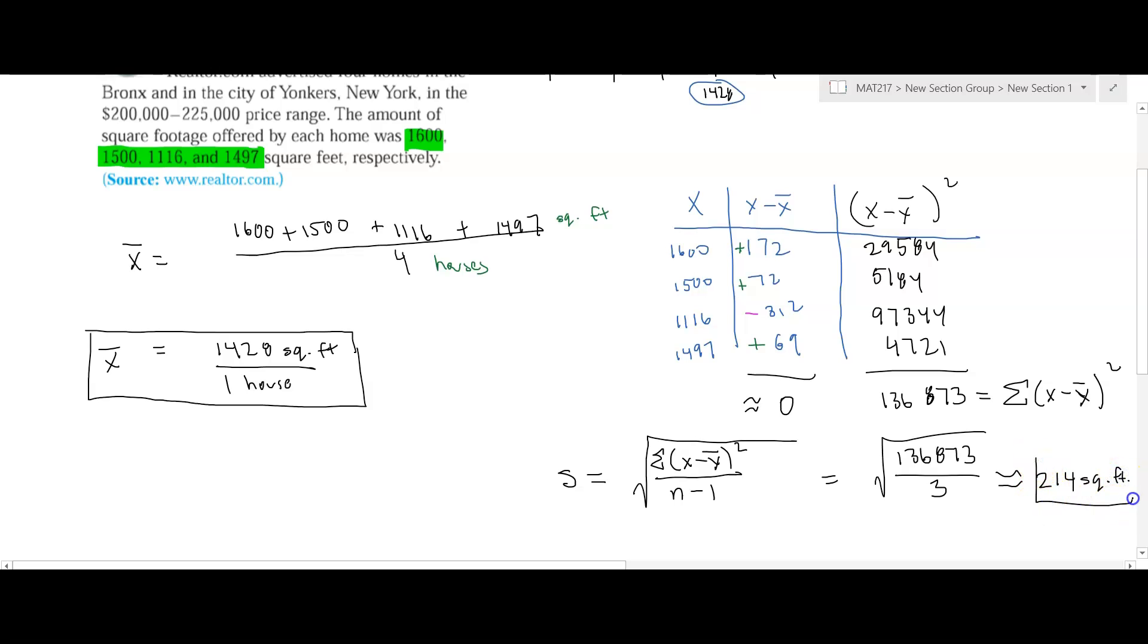Now this can be thought of as sort of an average deviation. It's not quite an average deviation because we did this squaring and square rooting, but you can kind of think about this as a measurement of the average spread. So we get houses that are on average about 1,428 square feet. And so then about 214 square feet on either side of that represents the bulk of all the houses based upon this sample.